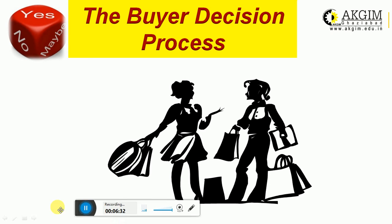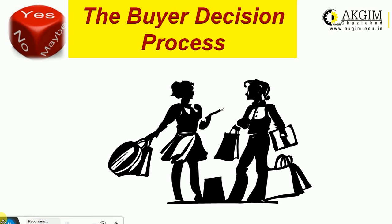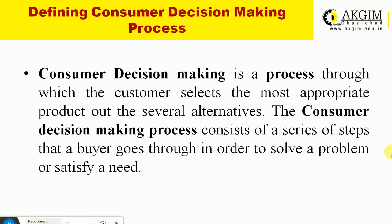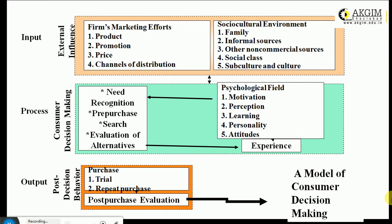Consumer decision making is a response to a problem. It pertains to making decisions regarding what category to buy, what to buy, where to buy from, how to buy, and what the mode of buying would be. It may be defined as a process of gathering and processing information, evaluating it, and selecting the best option from available options so as to solve the problem and make a final buying choice. Students need to keep this model in mind.